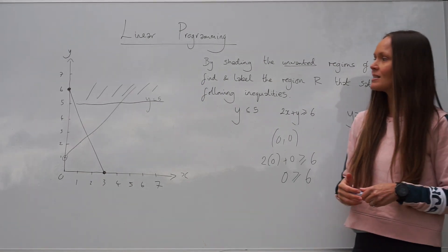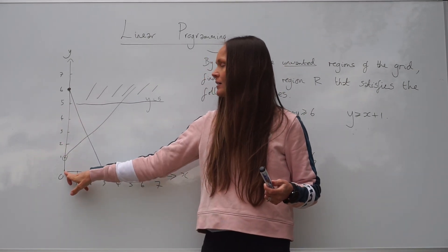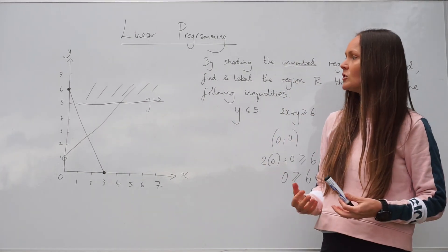So the point 0, 0 that I've chosen, which is underneath the graph down here, is incorrect. So that means it's the unwanted region.